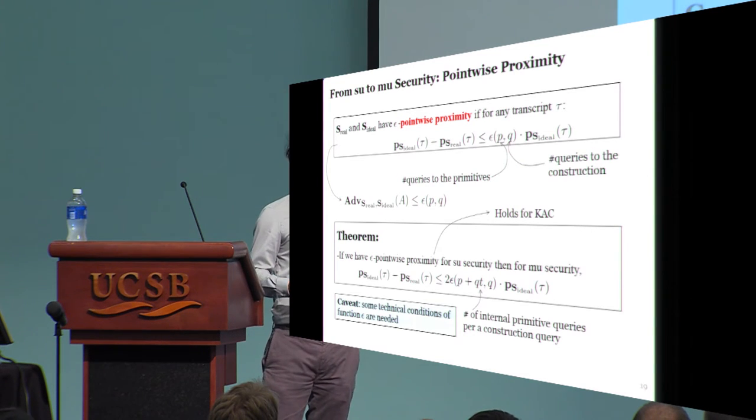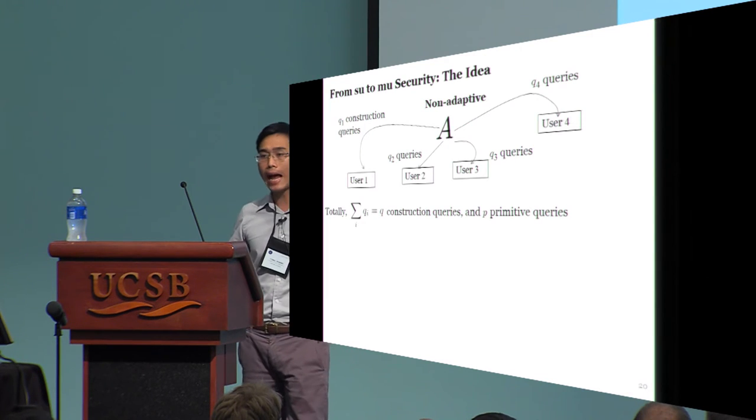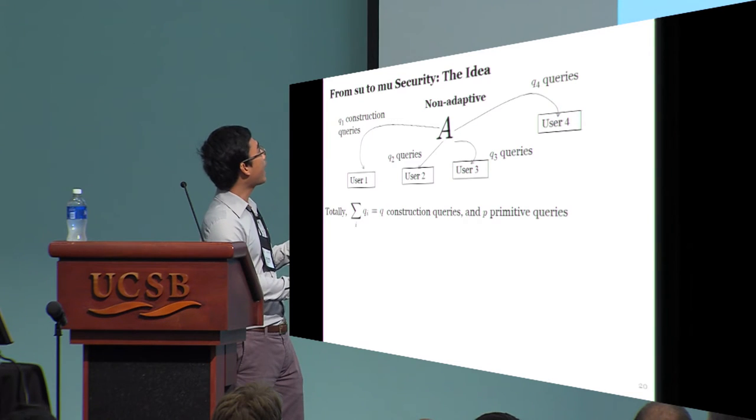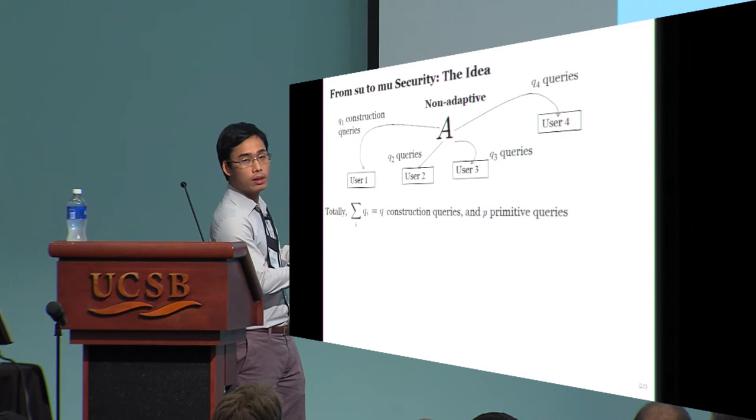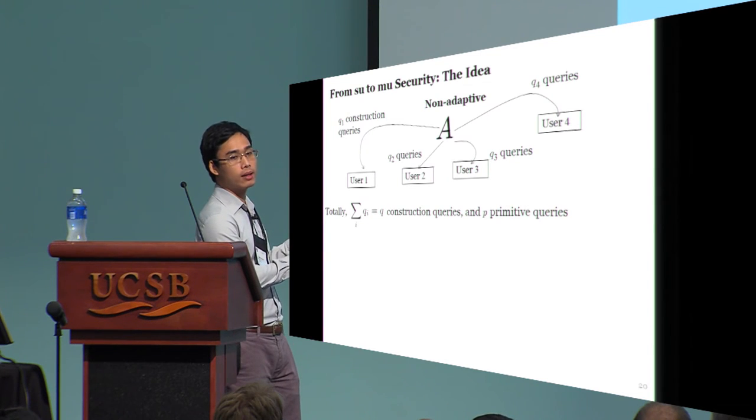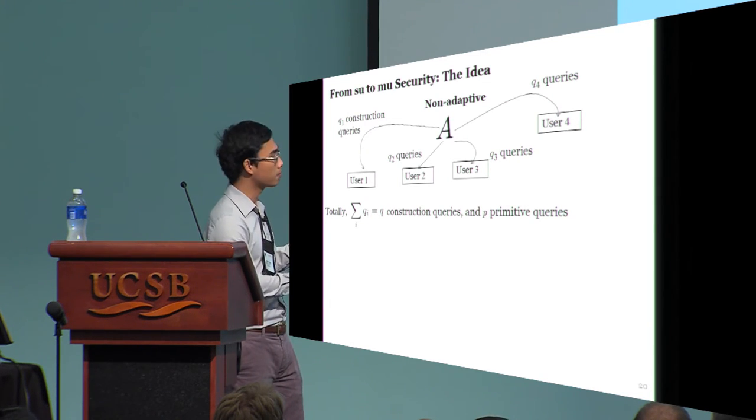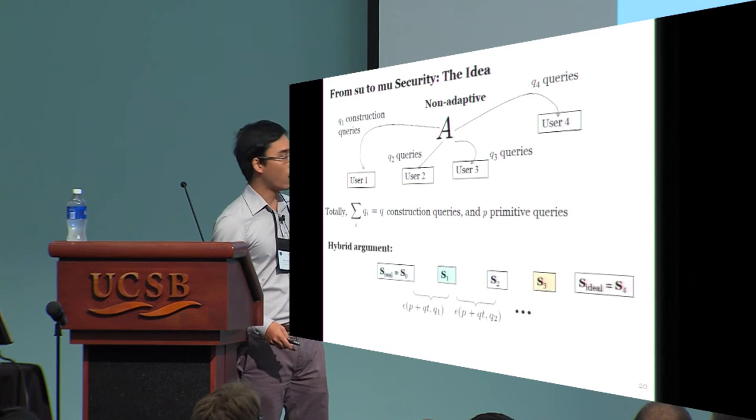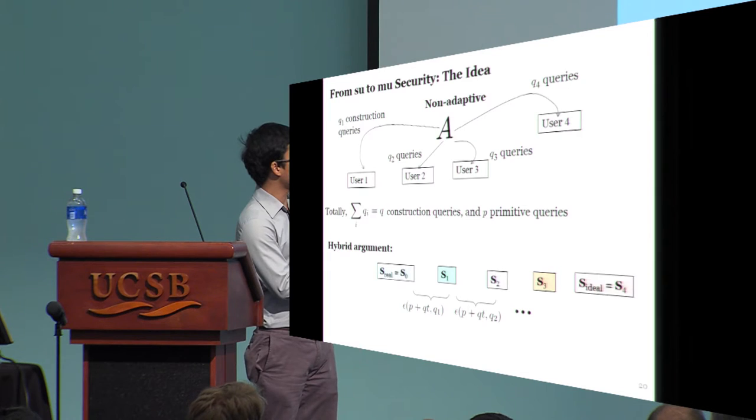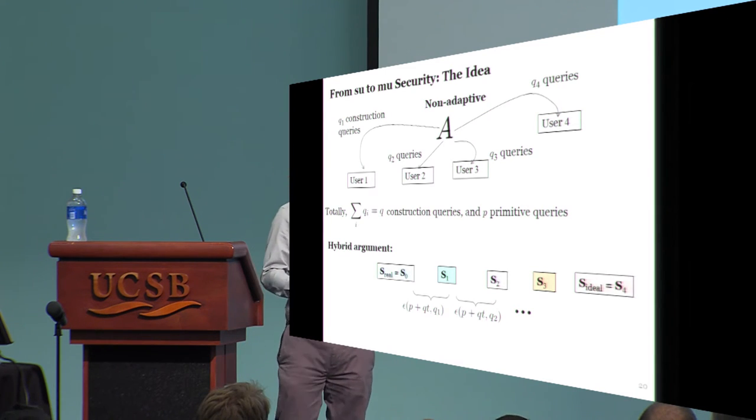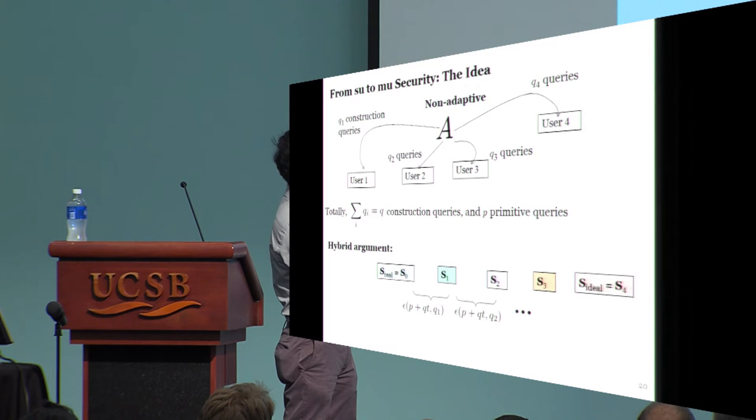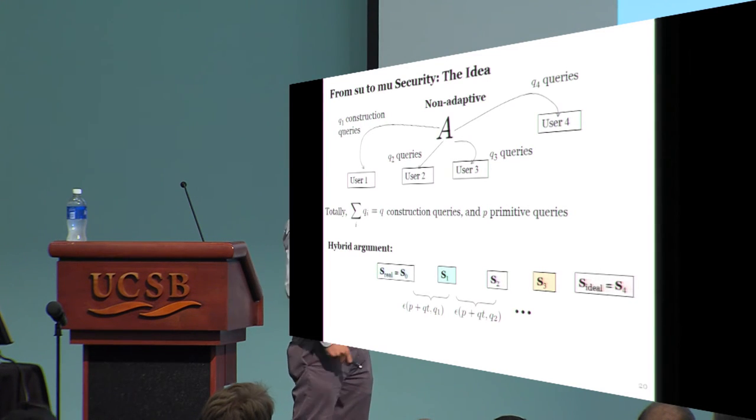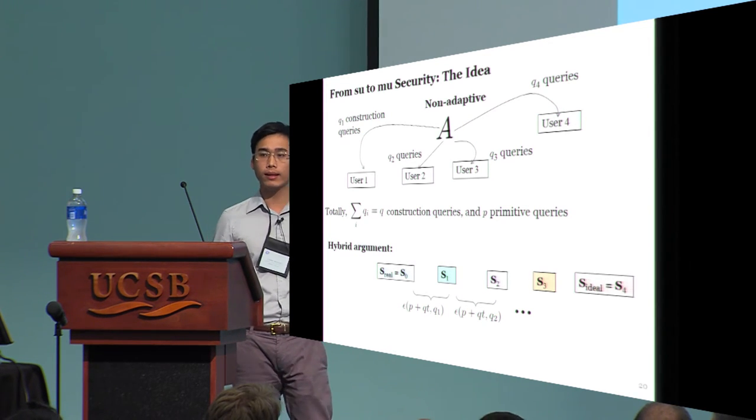To understand why this kind of theorem is true, let's first consider a non-adaptive adversary. Meaning that there are constants, Q1, Q2, and so on, such that the adversary makes Q1 construction queries on user 1, and so on. In this setting, if we use a hybrid argument, then all we need to do is to create some intermediate systems between the real system and the ideal one, and then use the single user security bound to kill the gap between consecutive pairs. This is pretty standard, but we need to be a bit careful in accounting adversary resources.